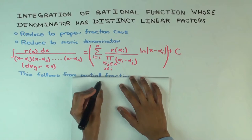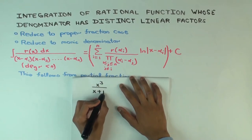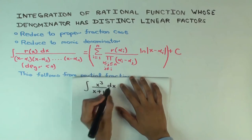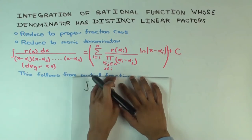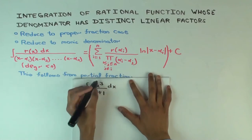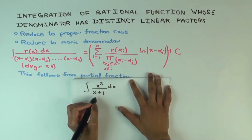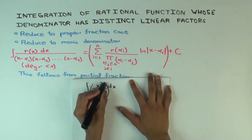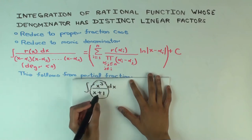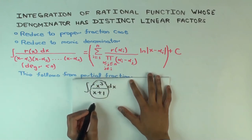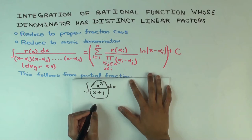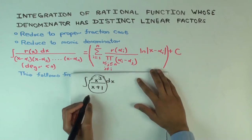Suppose I give you x cubed over x plus 1 and I ask you to integrate this. The method I'm going to discuss is not for this thing directly. What you do if you have something like this is you first reduce it to something for which the method is applicable. The problem is the degree of the numerator is not less than the degree of the denominator. In this case you can actually substitute u as x plus 1, but there are other cases where that's not directly possible.